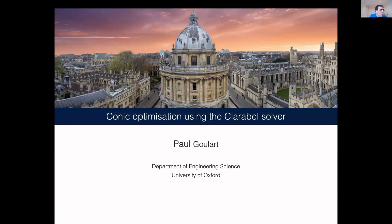Thanks very much. My name is Paul Goulard. I'm from the engineering department in Oxford. For the last year and a half, we've been developing this conic optimization solver in Rust called Clarabel.